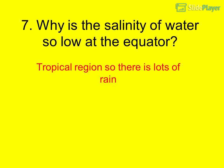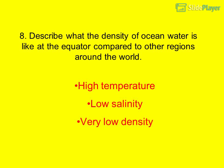Question 7: Why is the salinity of water so low at the equator? It is a tropical region, so there is lots of rain. High temperature and low salinity result in very low density.